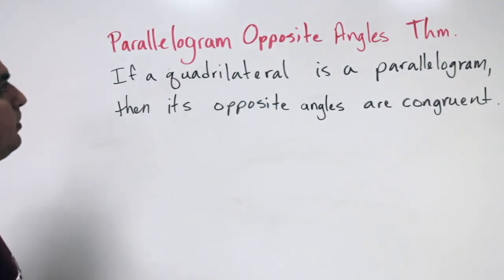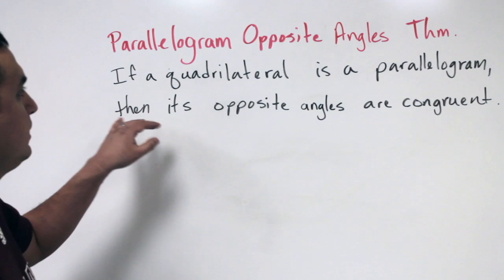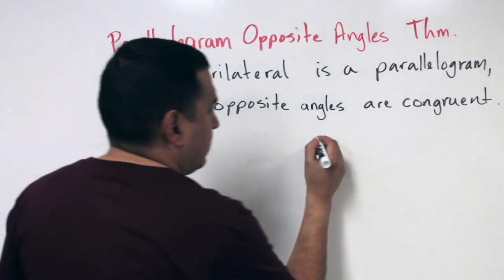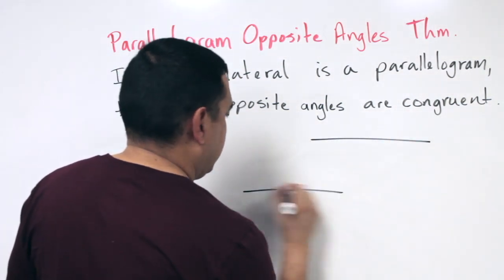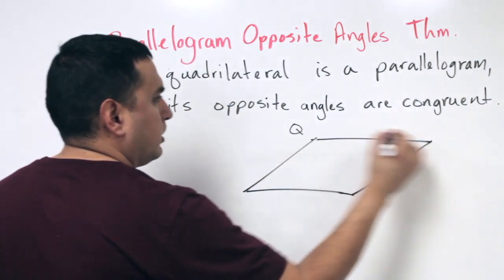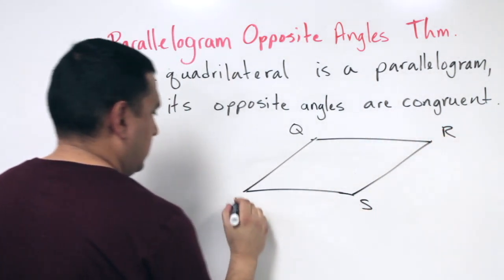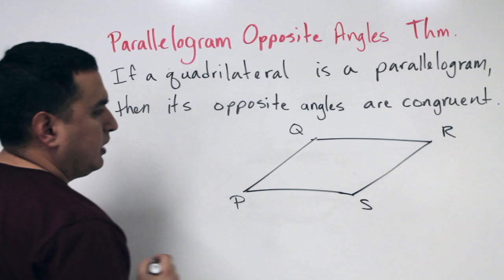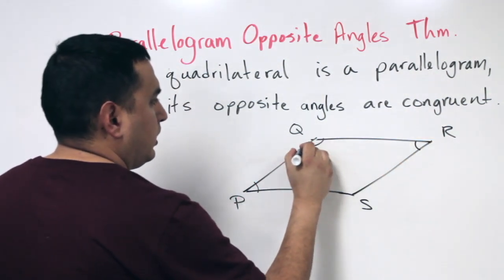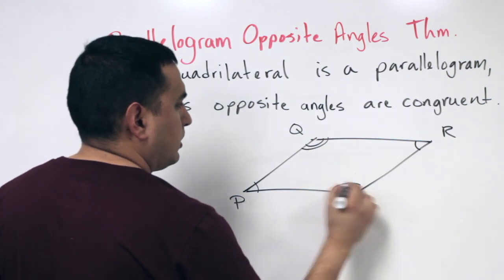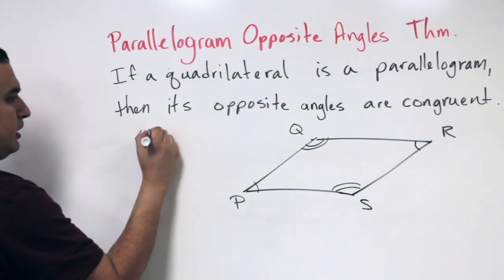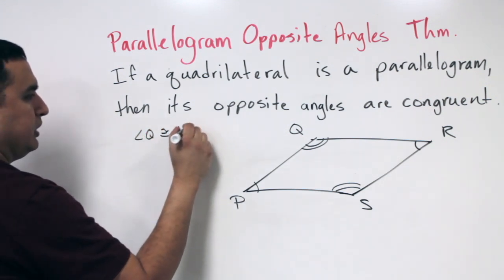Another property we have with parallelograms is that the opposite angles are congruent as well. So if I redraw this parallelogram and call it Q, R, S, P again, then that would mean that angle P is congruent to angle R, and angle Q would be congruent to angle S. Let's go ahead and write that out in symbol notation.